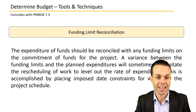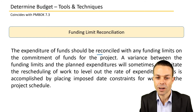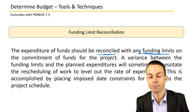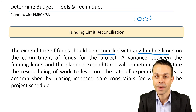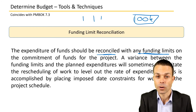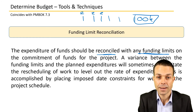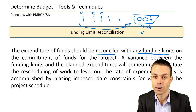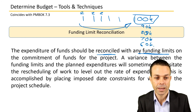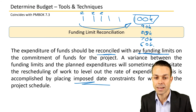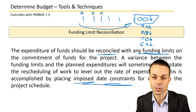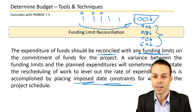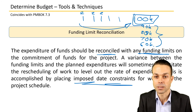Funding limit reconciliation means the expenditure of funds should be reconciled with any funding limits on the commitment of funds for the project. For example, if we have a hundred thousand dollars total and we're spending money at each phase, iteration, or milestone, that needs to be reconciled against the total budget. This is accomplished by placing imposed date constraints like milestones into the project schedule, tracking the amount spent and subtracting it from the total budget so we always know where we stand.